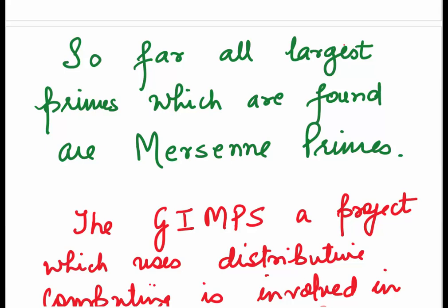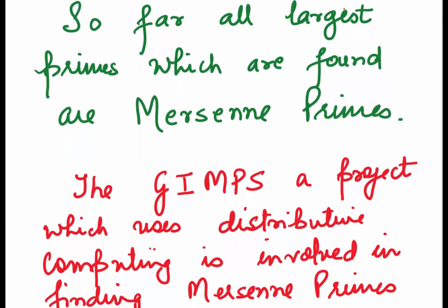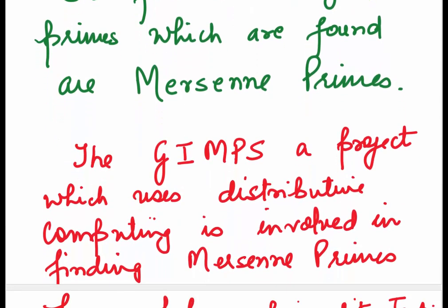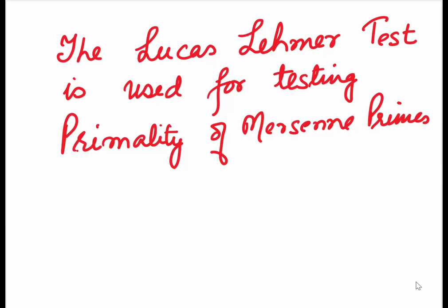The great internet Mersenne prime search, a project which uses distributive computing, is involved in finding the Mersenne primes. The Lucas-Lehmer test is used for testing primality of Mersenne primes. This test, as I had mentioned earlier, was developed by Lucas in the year 1878. And later, in 1930, it was proved by Derek Henry Lehmer. So it is named after them.